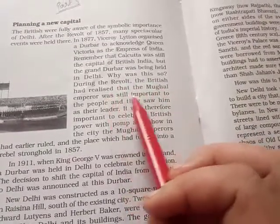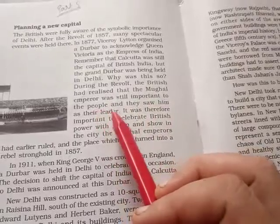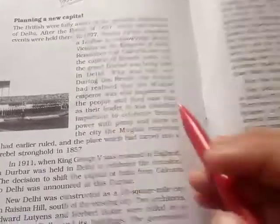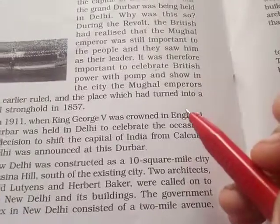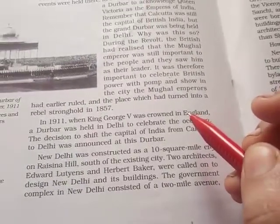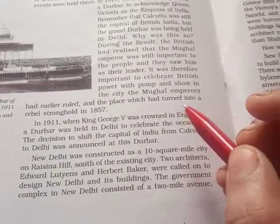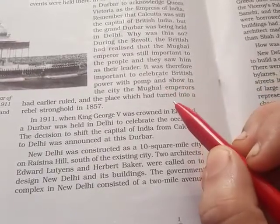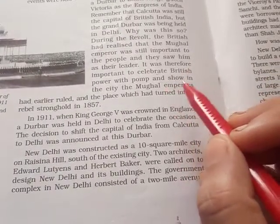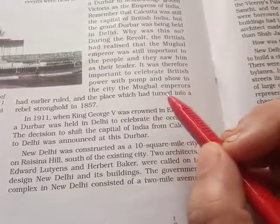After the revolt of 1857, the British realized that the Mughal Emperor was still important to the people — they still saw him as their leader. Therefore, the British wanted to celebrate British power with pomp and show it in the city where the Mughal Emperor had earlier ruled.